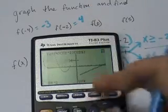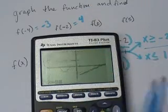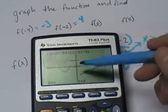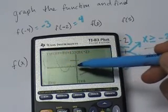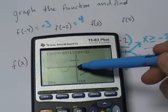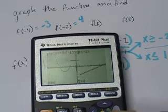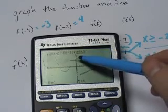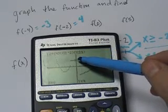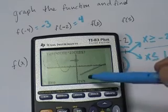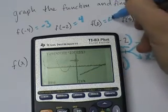How about f(0)? We'll go to calc value 0. What does it do? It chooses the first function. Well, the first function doesn't exist here. So what do you do? Press the down arrow and now it chooses the second function, and it gives you the answer x equals 0, y equals 4.